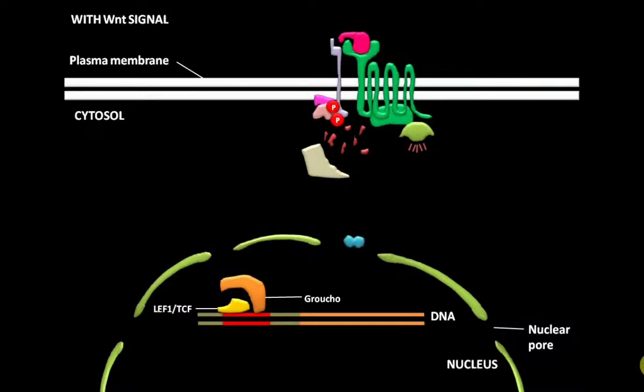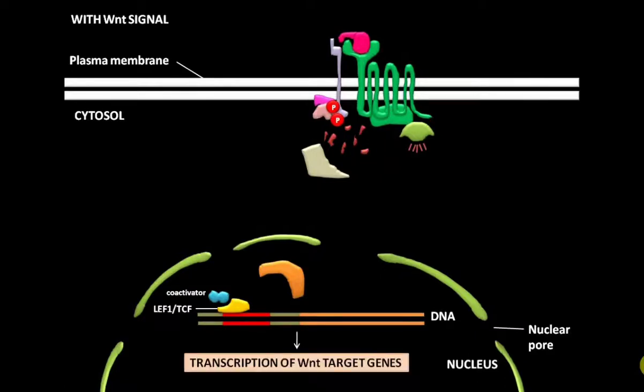Then, in the nucleus, beta-catenin binds to LEF1 or TCF and displaces Groucho. Now, beta-catenin functions as a co-activator which induces the transcription of Wnt-target genes.